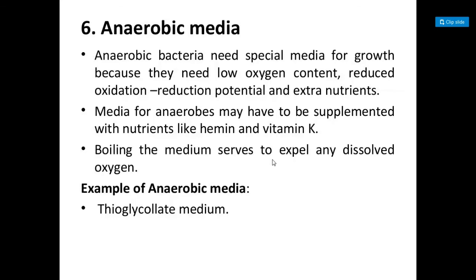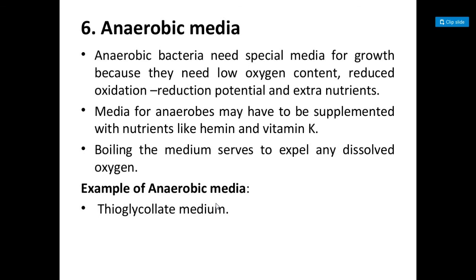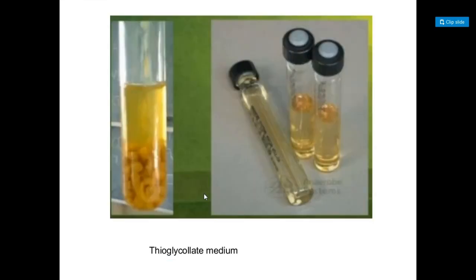The sixth type of media according to functional use or application is anaerobic media. Anaerobic bacteria need a special medium for growth because they require low oxygen content, reduced oxidation-reduction potential, and extra nutrients. For cultivation of anaerobic bacteria, the media may have to be supplemented with nutrients like hemin or vitamin K. Boiling the medium serves to expel any dissolved oxygen. An example of anaerobic media is thioglycolate medium.